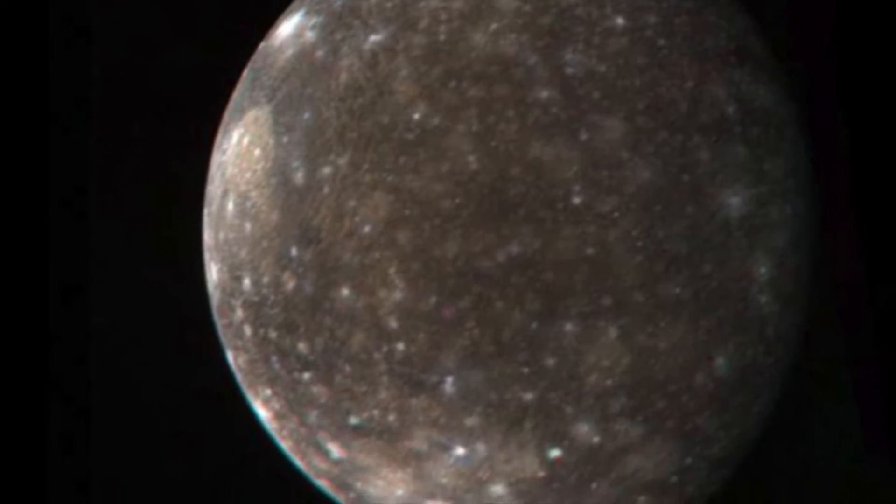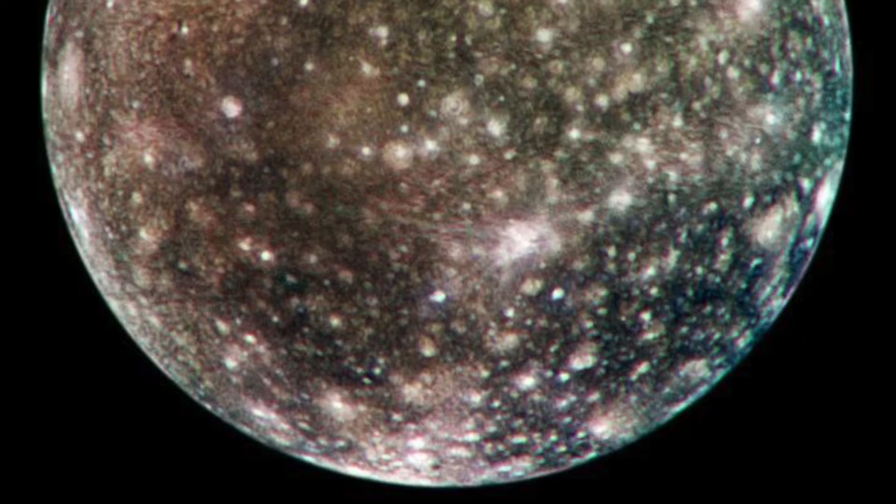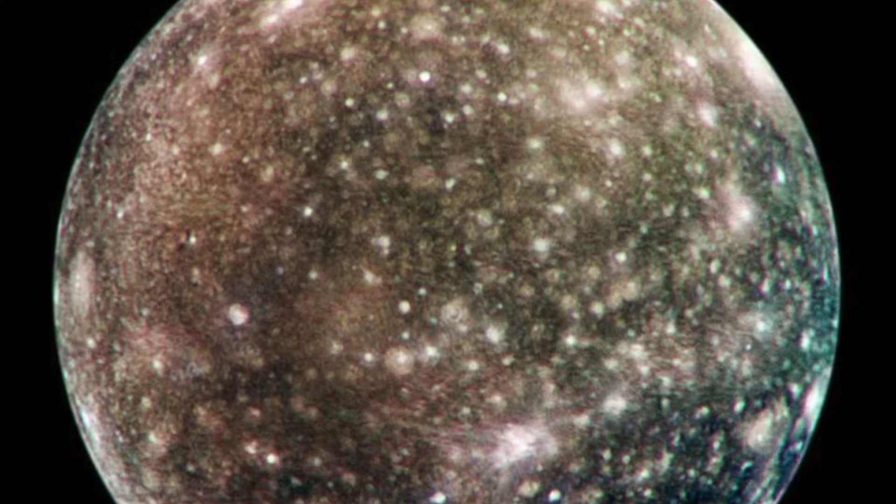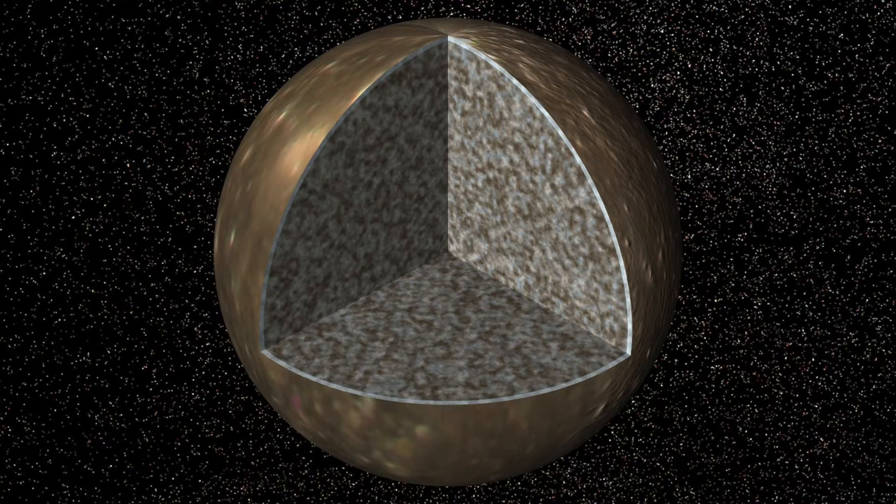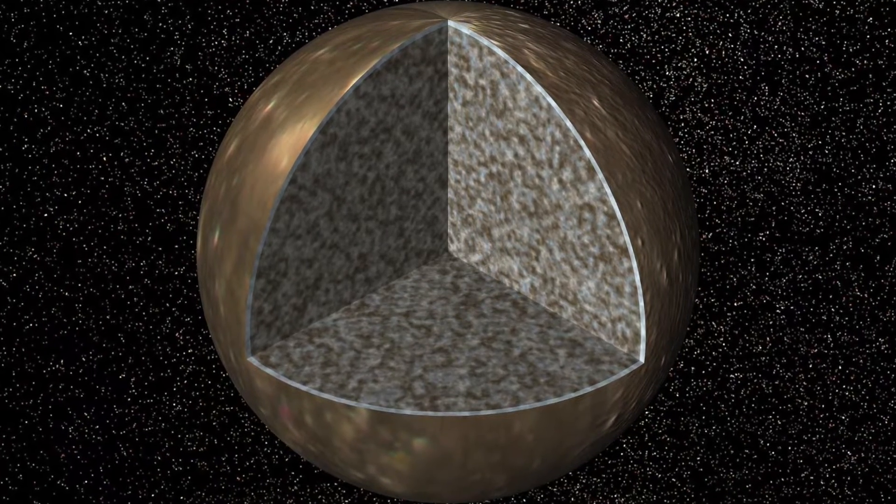Callisto is the most distant of Jupiter's large moons, so it gets the least tidal heating. It never got hot enough to have fully differentiated and it doesn't have clear internal layers.